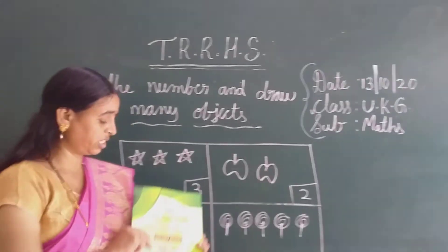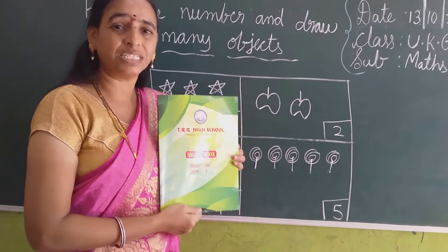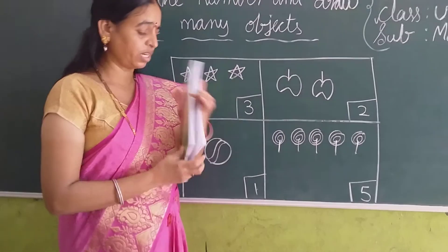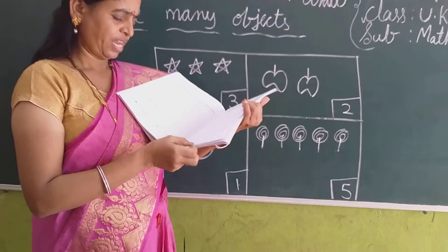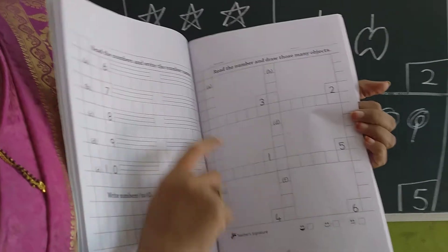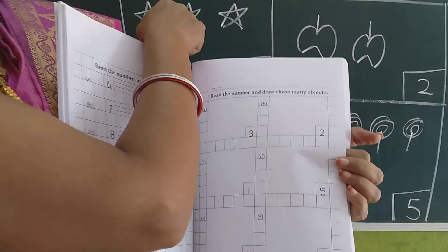Now look at here. Children, this is our book. Those who have no books, please collect from the office room, children. Now look at here. Open page number 87. Page number 87. I explained this on the board. Okay?